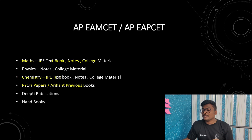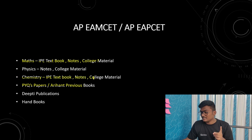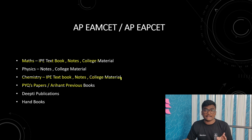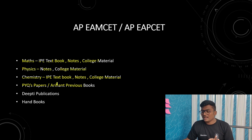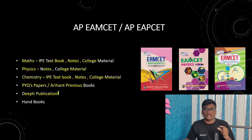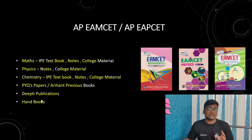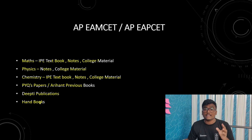Next, for Chemistry, the IP textbook is very important, along with notes and college material. College material has 3-4 levels, so try to solve at least one or two levels. For Physics, notes and college material are recommended. Deep Publications also has separate books, and handbooks which are formula books.